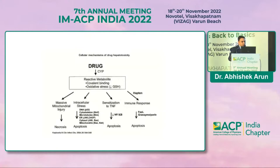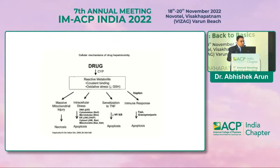The cellular mechanism linked to liver injury causation involves reactive metabolites causing covalent binding and oxidative stress, leading to massive mitochondrial injury, intracellular stress, sensitization of tumor necrosis factor alpha, and altered immune response as a result of hapten formation. This may result in different forms of liver injury including necrosis due to intracellular stress, apoptosis due to sensitization of tumor necrosis factor alpha, and injury due to altered immune response.